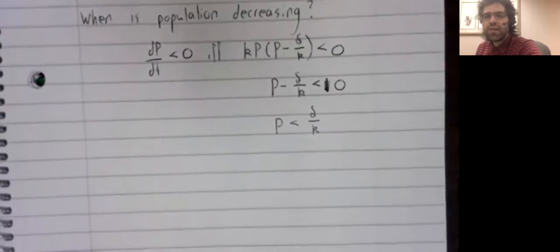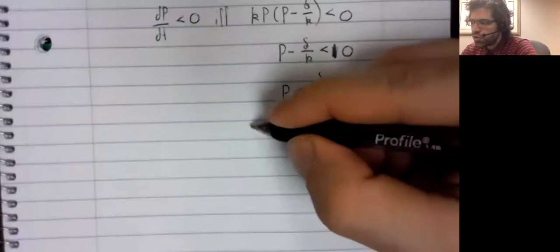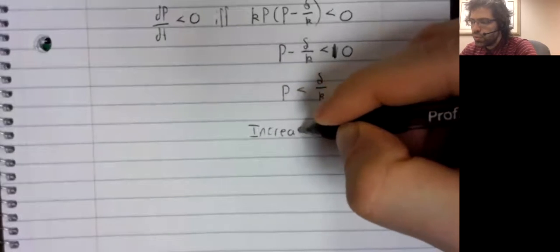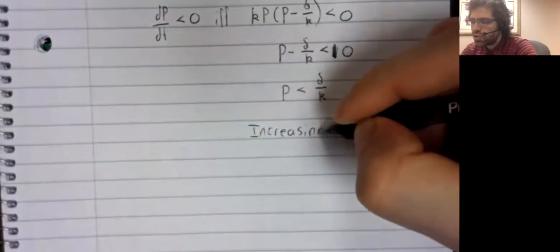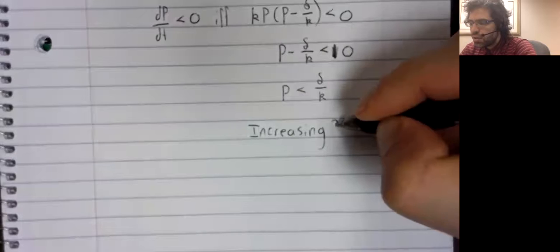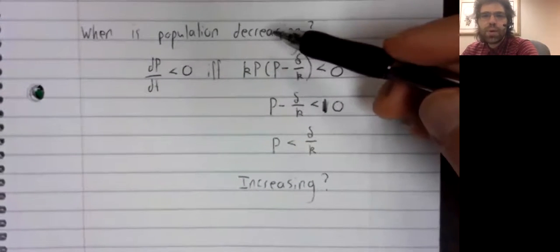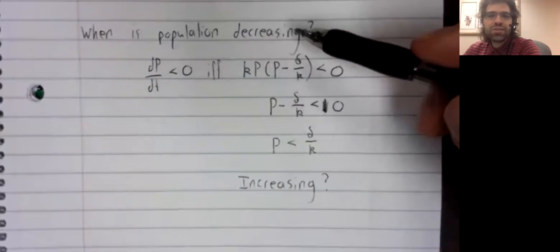What if we have a large initial population? Well, the sister question to the one we just asked is, when is the population increasing?